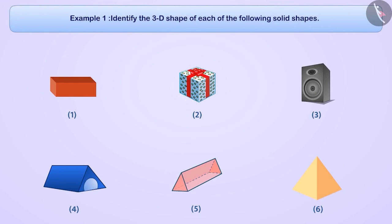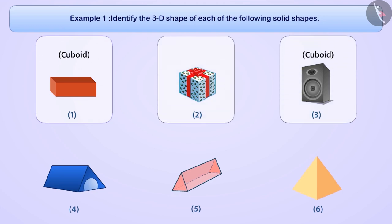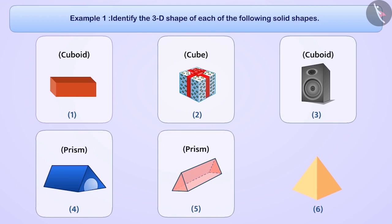As you can see, the shape of figure 1 and figure 3 is a cuboid. The shape of figure 2 is a cube. The shape of figure 4 and figure 5 is a prism and the shape of figure 6 is a pyramid.